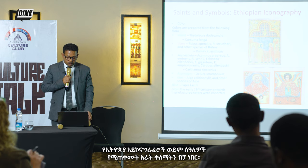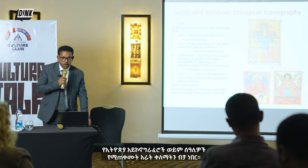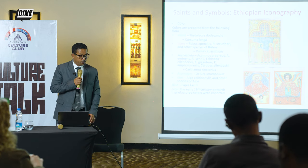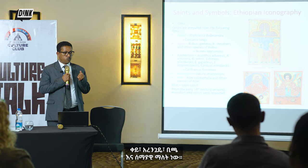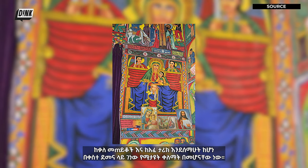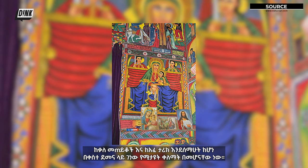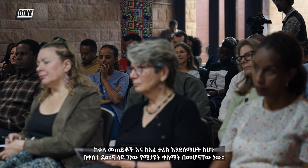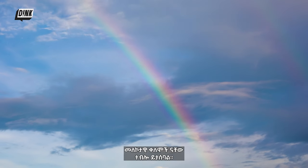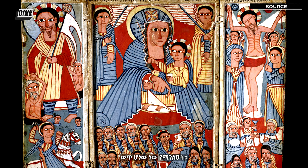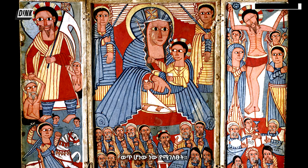Ethiopian iconographers or painters used only four colors: red, green, yellow, and blue. The explanation from interviews and oral traditions is that these colors are the most visible colors in the rainbow, so they are considered divine colors. What makes Ethiopian painting unique is its two-dimensionality — we call that planar presentation. It's like a plane.